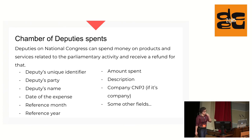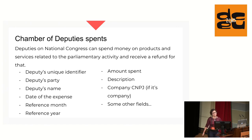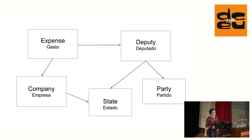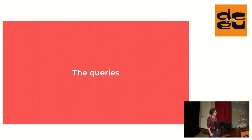The other dataset is the Chamber of Deputies' Expenses. We have a National Congress; each deputy has the right to spend a certain amount of money on their activities, and the dataset describes how they spent that money. I have a unique identifier for the deputies, the party, the name, the date, the reference for month and year, the amount, description, and the company they spent the money on. Those become my tables: an expense related to a deputy, the deputy related to a party and a state, and the expense can be related to a company that can in turn be related to a state.